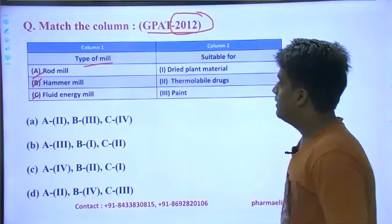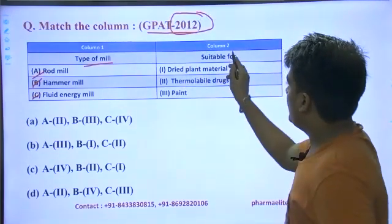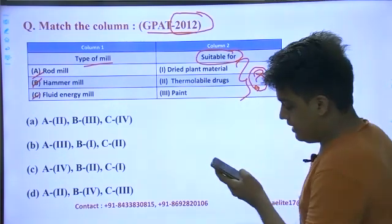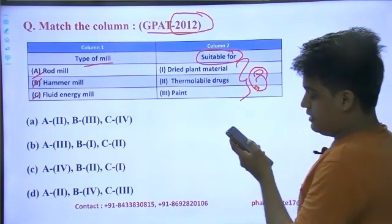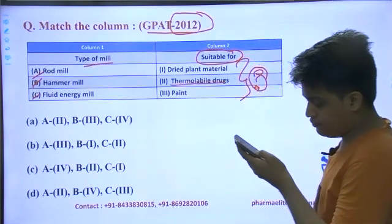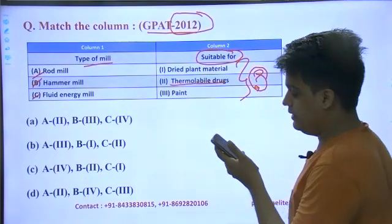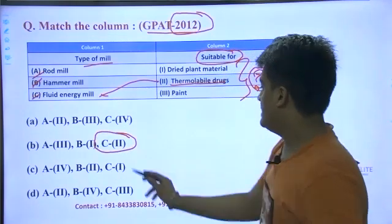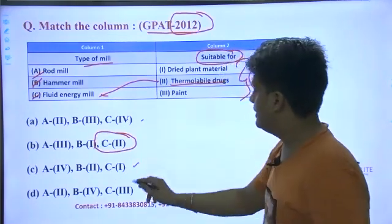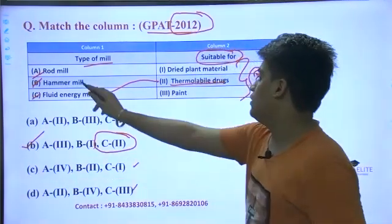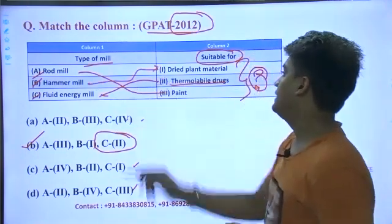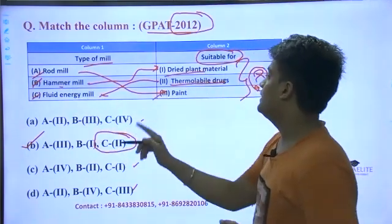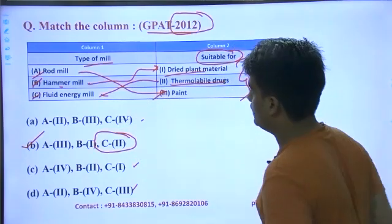This is GPAT 2012 — analyzing which type of mill is used for which type of material. For milling thermolabile material, which type of mill should be used? The answer is a fluid energy mill — the fluid energy mill is the one used for thermolabile drugs. So C equals 2 is the key option, and this is the answer. Rod mill is used for paints, and hammer mill is for dry plant material.